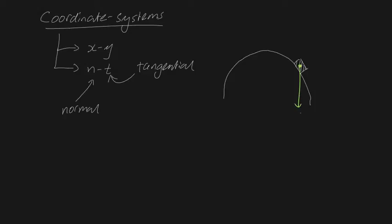If we draw a free body diagram, we'll have mg downwards, and a normal force perpendicular to the path, n.